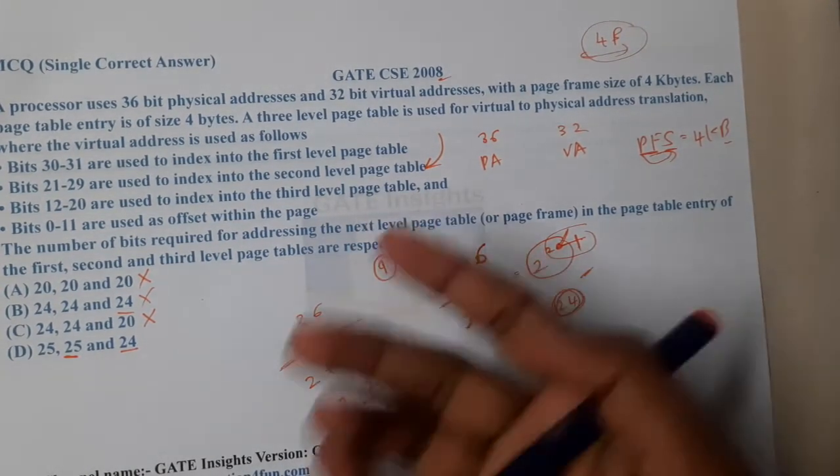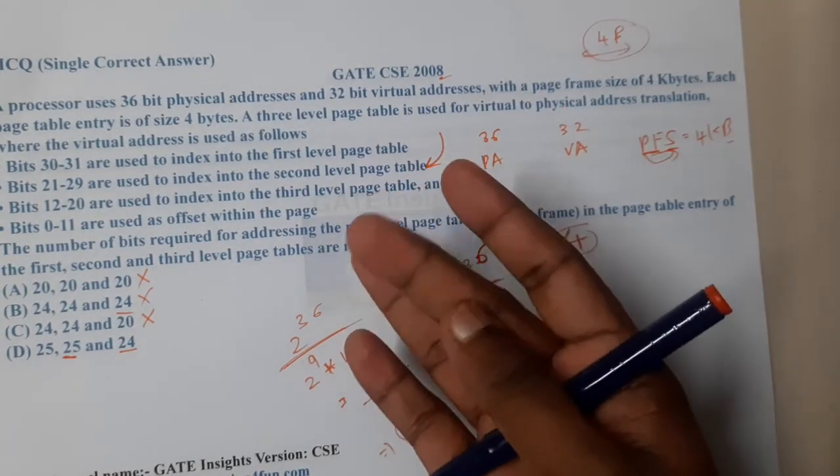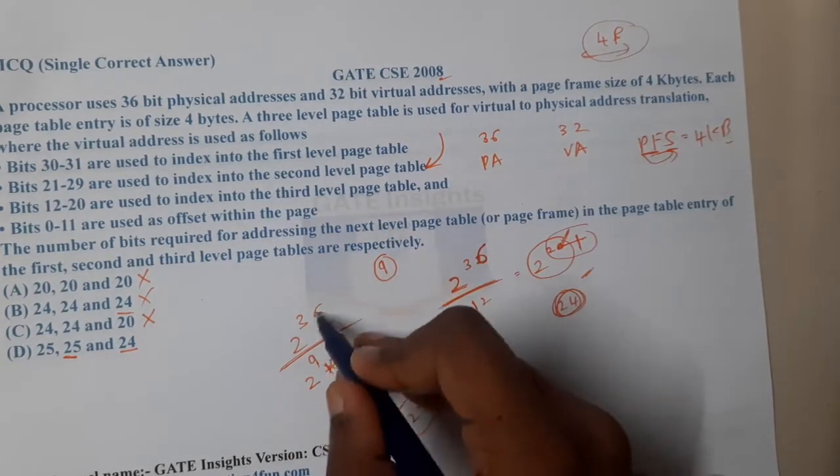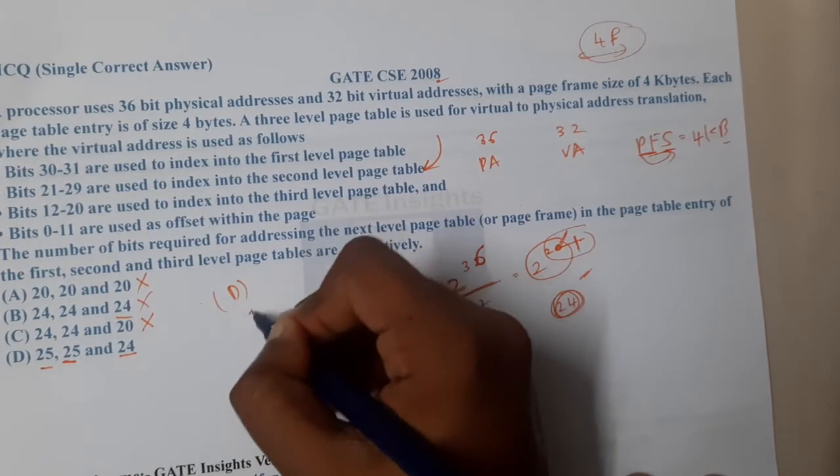If you want to check, you can check with the same approach. So 12, 13, 14, 15, 16, 17, 18, 19, 20 - so 9 bits. And each of that particular entry is of 4 bytes divided by 36. Here also you will get 25, so option D is the correct answer.